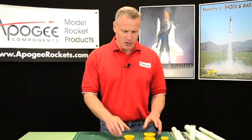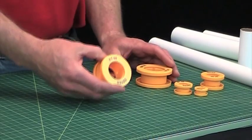Hi, I'm Tim Van Milligan and this is the Apogee Rocketry Workshop where I show you how to build rockets. Today I'm going to talk to you about cutting body tubes using the Estes Tube Cutting Guides.